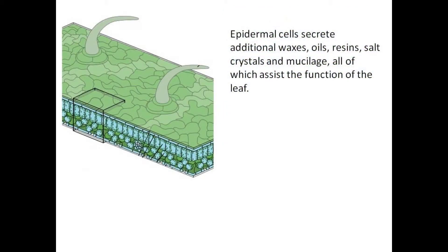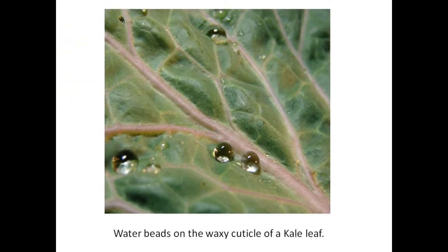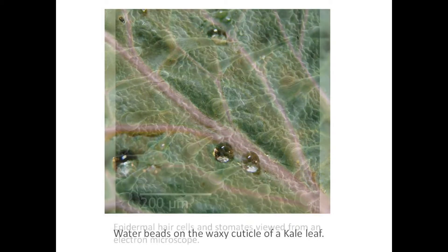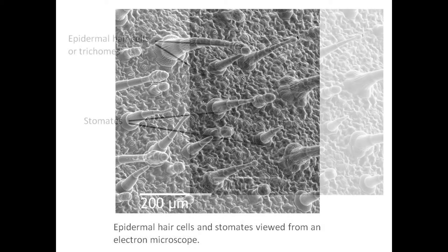Epidermal cells secrete additional waxes, oils, resins, salt crystals, and mucilage, all of which assist the function of the leaf. Basic epidermal cells lack chloroplasts. Here is an example of the waxy barrier effect. Epidermal cells have attachments of various shape, structure, and function, called trichomes.